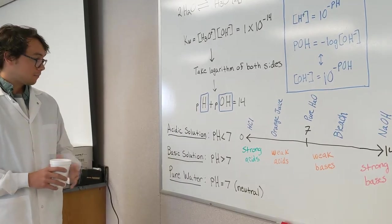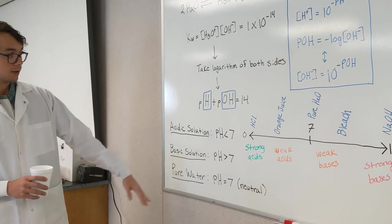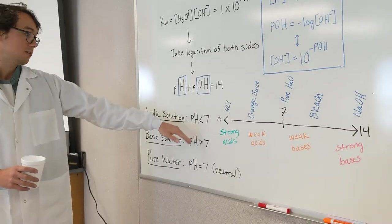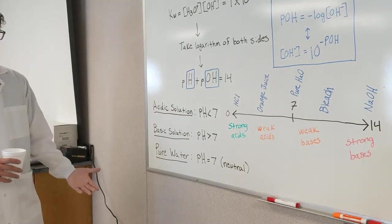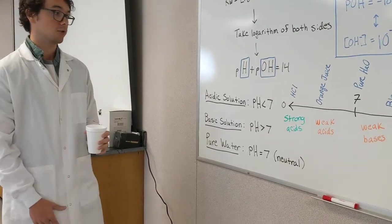Just some other basic information here. For a solution to be acidic, we got a pH of less than 7. A basic solution will have a pH greater than 7. And then, of course, pure water is a pH equal to 7. We call that a neutral solution.